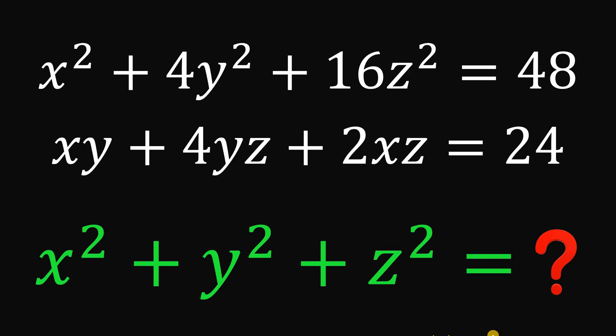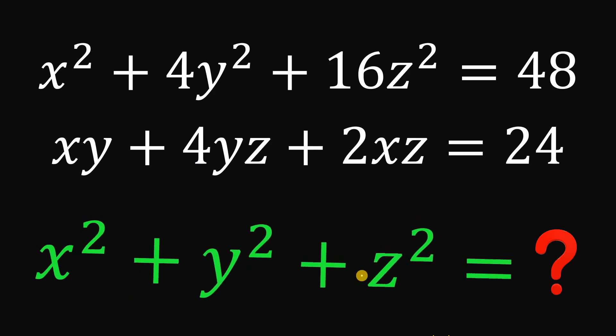Can you solve this math challenge? Here's the question. Given the equation x squared plus 4y squared plus 16z squared equals 48, and xy plus 4yz plus 2xz equals 24, the goal is to find the numerical value of x squared plus y squared plus z squared.